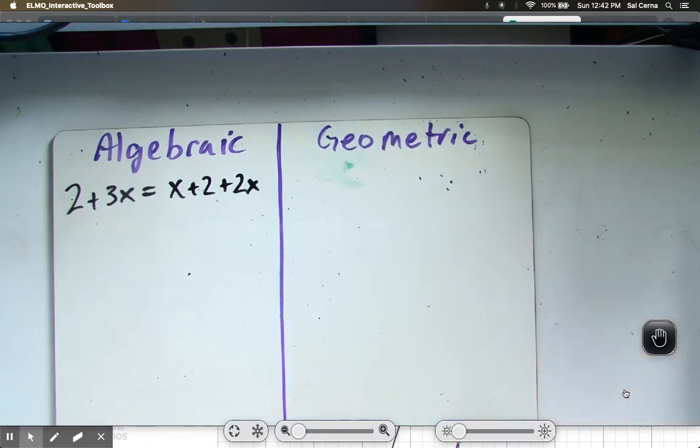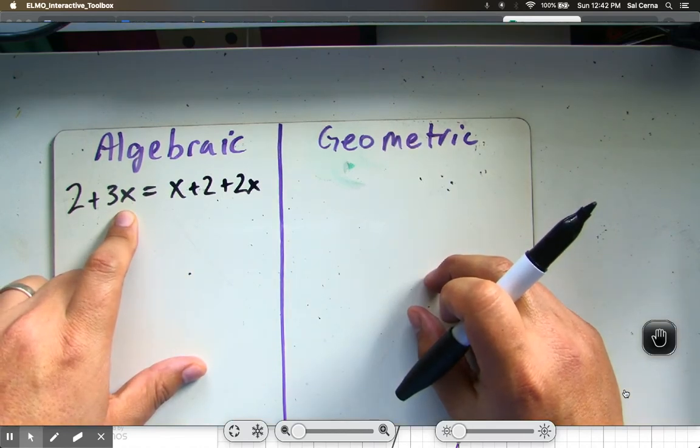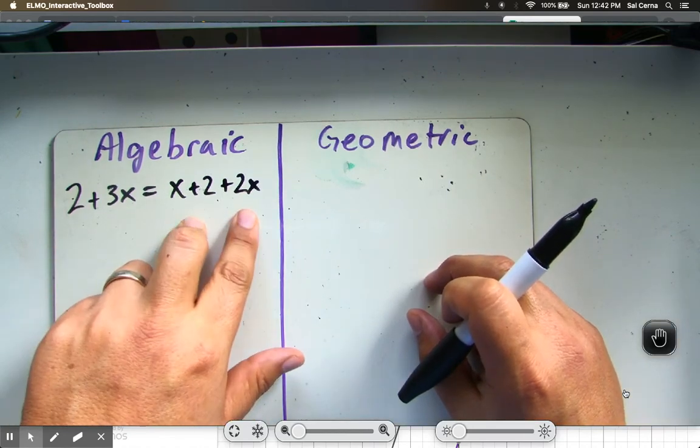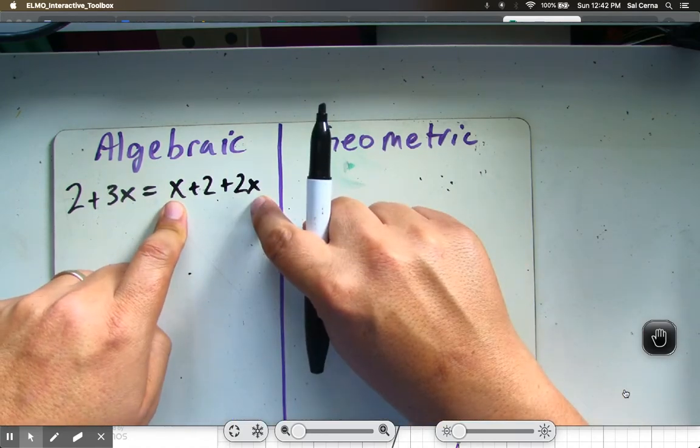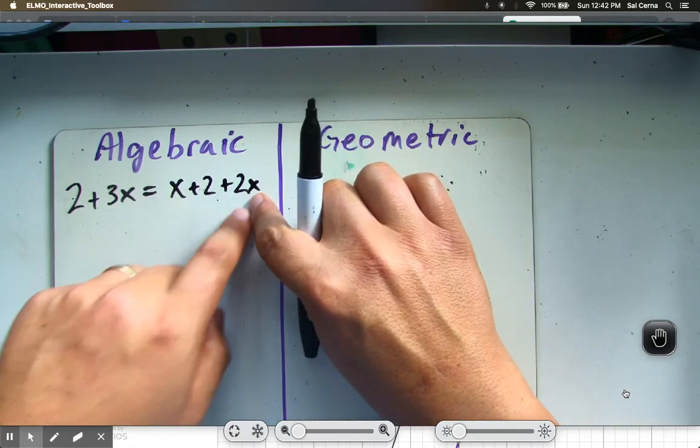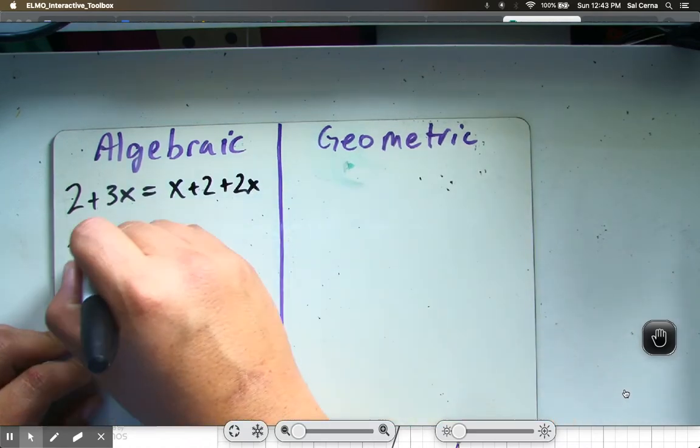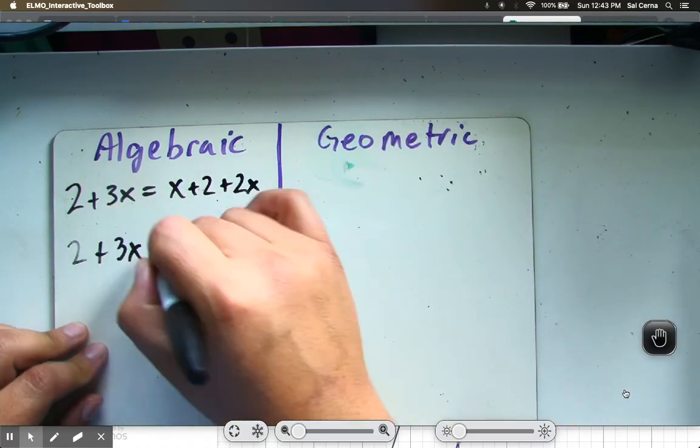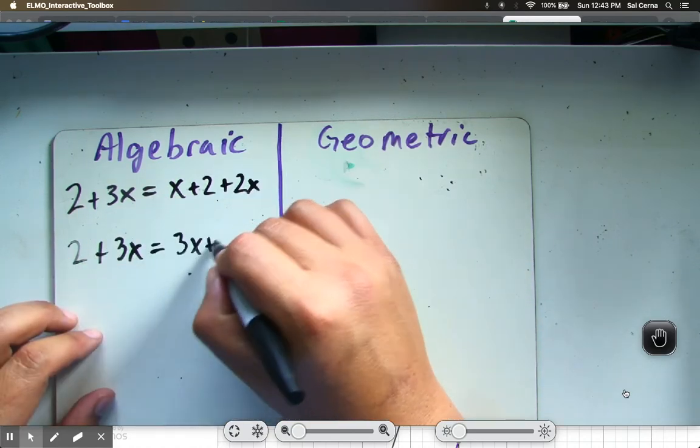So we'll jump here algebraically. First thing I'm going to do, I notice I have one variable term on the left. On the right side of the equation, I notice that I have two variable terms. Entonces lo primero que quiero hacer es sumar y simplificar esa expresión primero. So I'm going to rewrite this as 2 plus 3x equals 2x plus x is 3x plus 2.